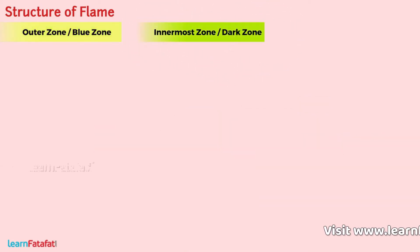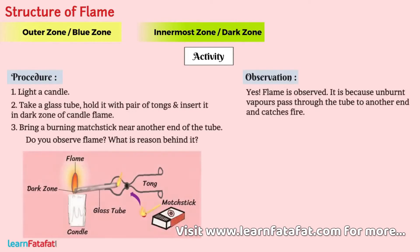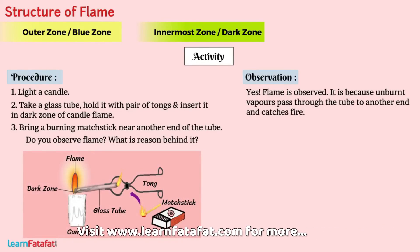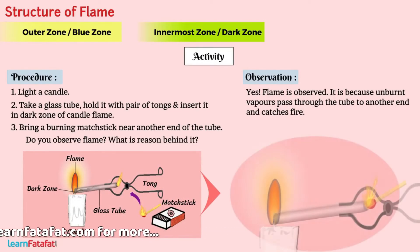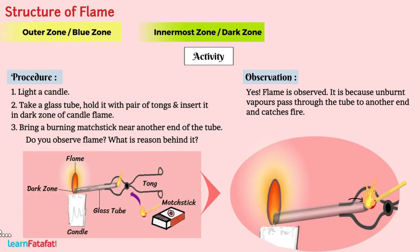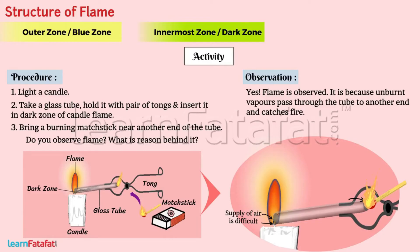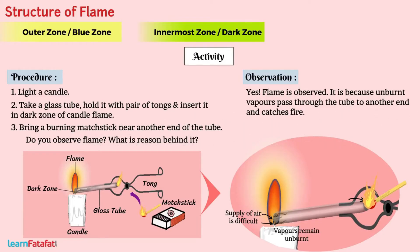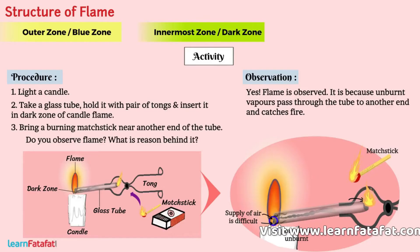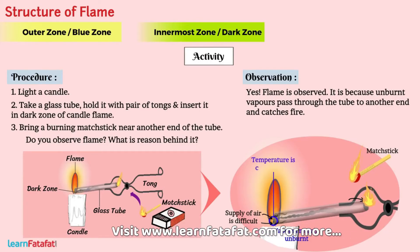Innermost zone or dark zone. In the activity, you have seen that the flame can be observed at the other end of the tube because inside the flame, the supply of air is difficult. Therefore, vapors remain unburnt. These vapors pass through the glass tube and catch fire at the other end of the tube in the presence of a matchstick. Thus, in this region of the flame, vapor remains unburnt and the temperature is the coolest of all.